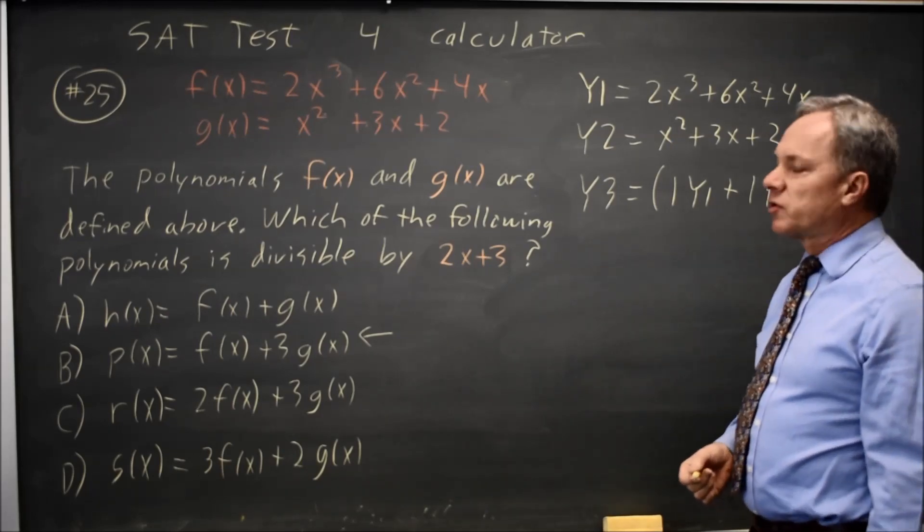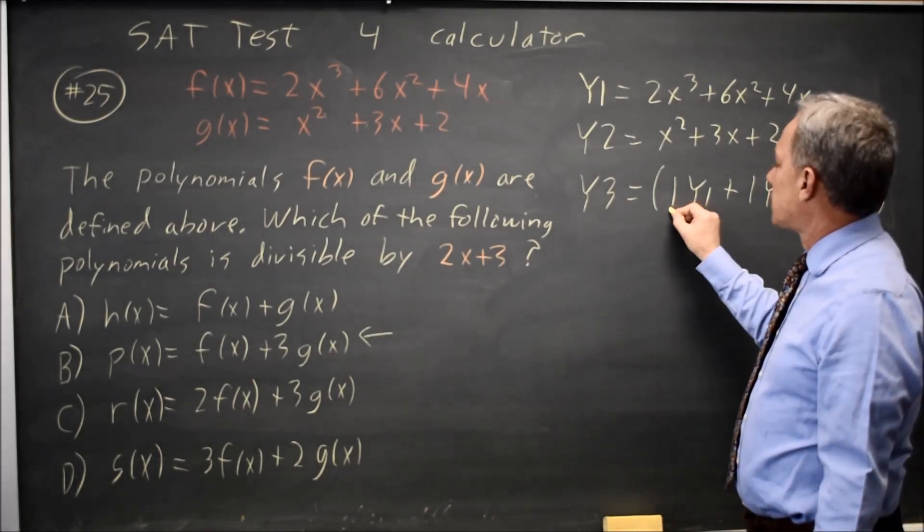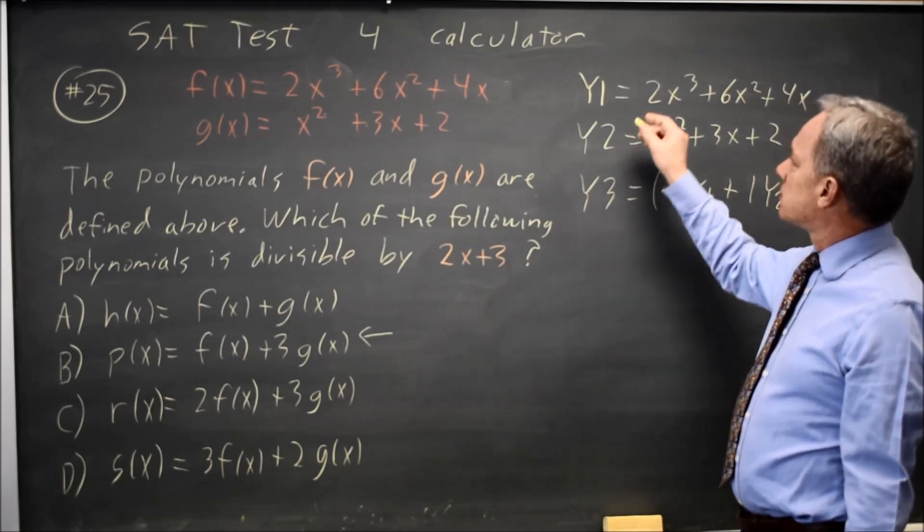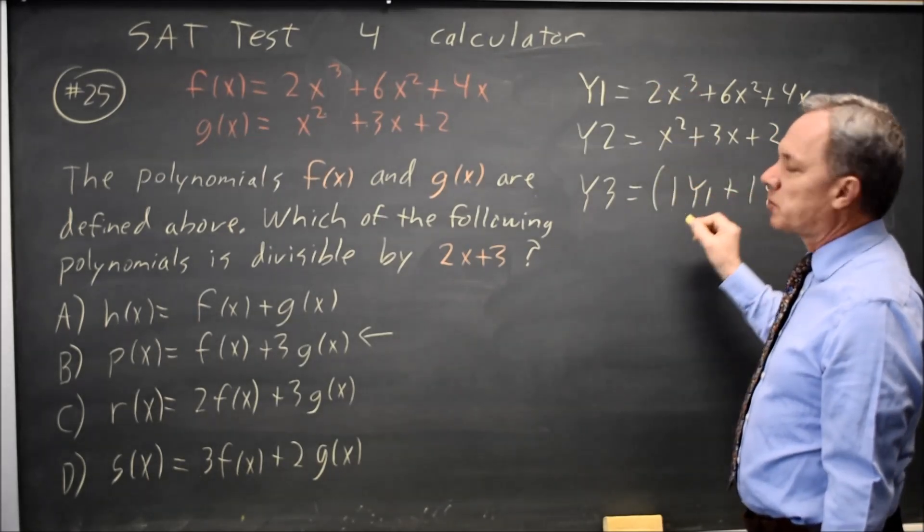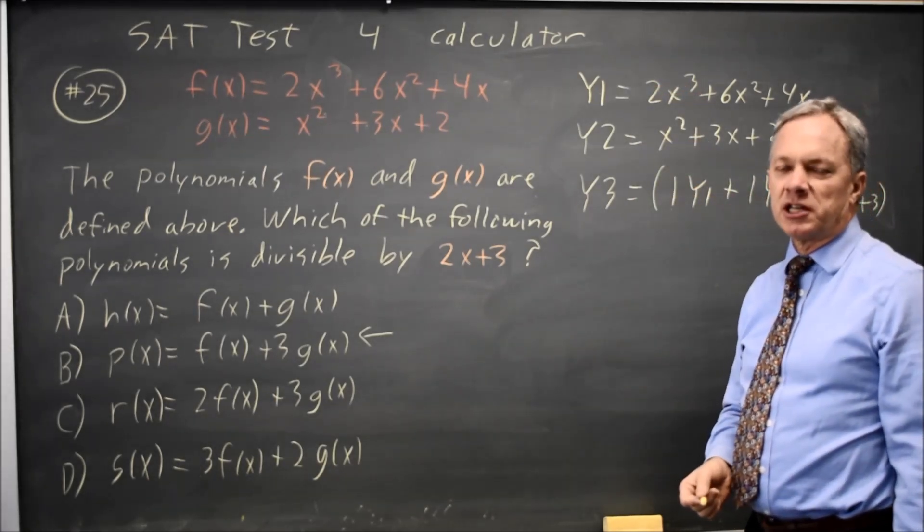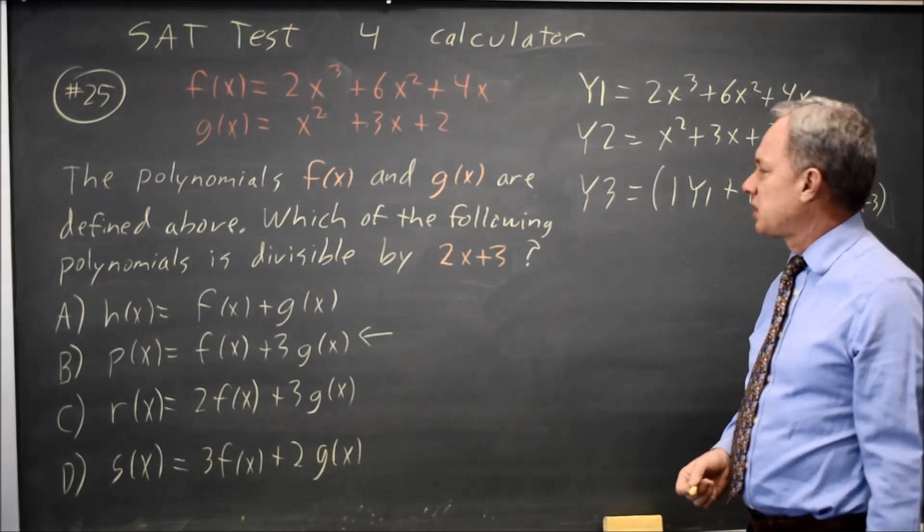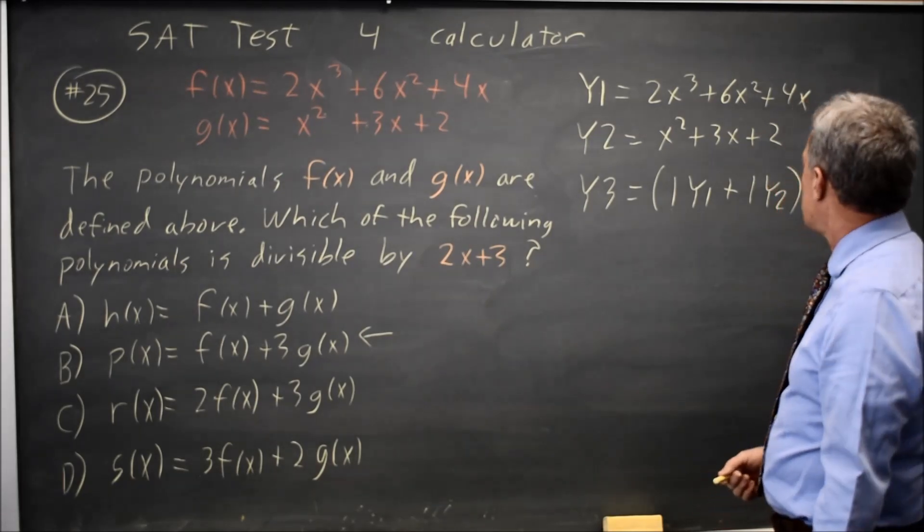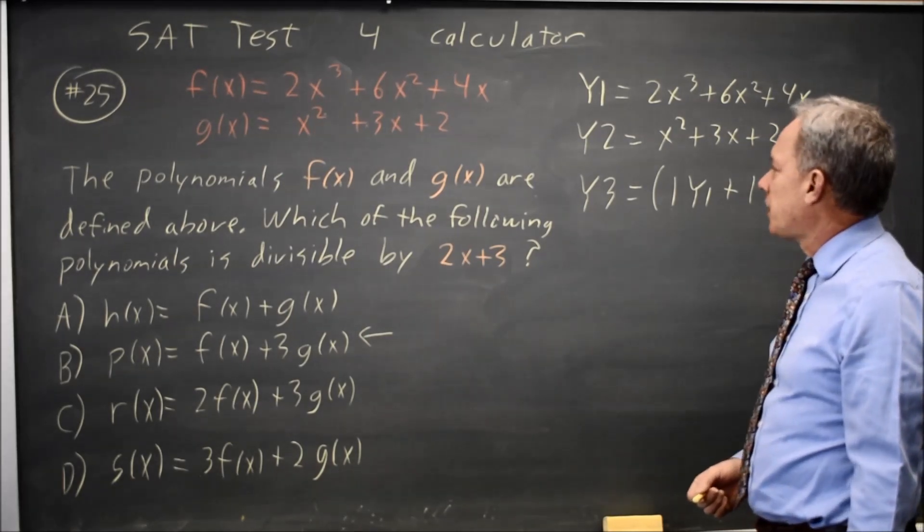If y3 evenly divides, I'll get a parabola because this linear combination will always be a cubic. Cubic over linear is quadratic if it divides evenly. If this does not divide evenly, I'll get a vertical asymptote at x equals negative 3 halves.